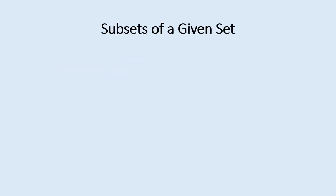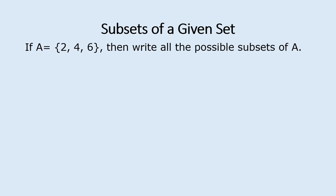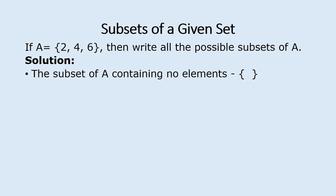We start by looking at subsets of a given set. If we have set A with elements 2, 4, 6, then we write all the possible subsets of A. We know that the empty set is a subset of all sets, so we have the subset of A containing no elements, which is the empty set.